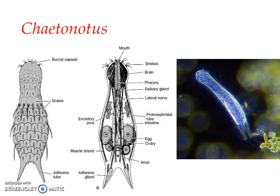The typical example is Chaetonotus, which has a dome-like dorsal side and a flat ventral side. The body wall is formed of cuticle, and the cuticular covering on the dorsal side is modified to form very conspicuous scales, spines, and bristles. This gives the animal a resemblance to certain ciliated protozoans.